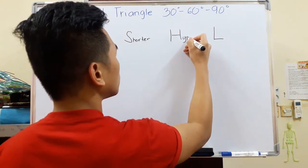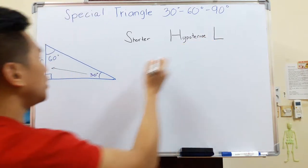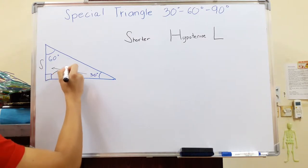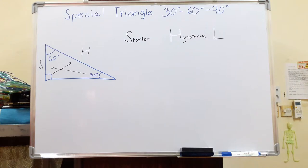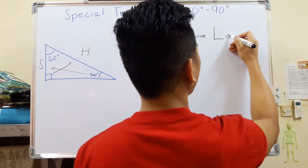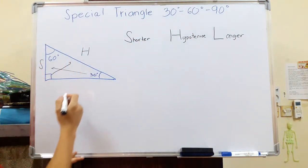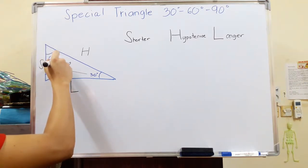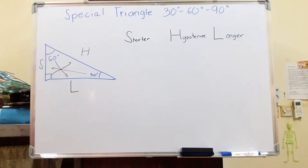Now the hypotenuse — the hypotenuse is the longest side in the right triangle, which is always opposite the 90 degree mark. This is the 90 degrees, and this is the hypotenuse. And then lastly, of course, the longer side. The longer side is opposite of the 60 degree mark — that is where you can find it.